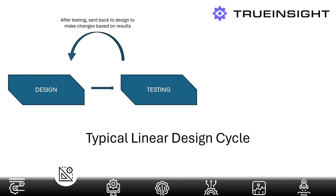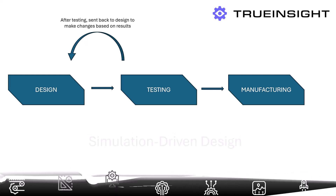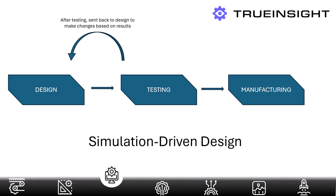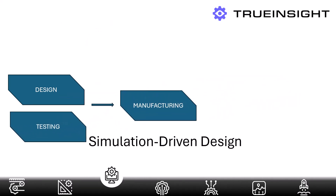Once the testing is complete, it's sent back to the design stage to make those changes based on the simulation results. Then it goes back to the testing stage, and that cycle can happen many times. Then physical prototyping happens before it's passed along to the final manufacturing stage. Now if we look at how simulation-driven design changes this, the idea is to bring the simulation process into the design stage. Designers can run quick simulations and adjust their design on the fly, and testing can start as soon as the model is created. This process saves a ton of time in the design and testing cycle before it's passed along to manufacturing.